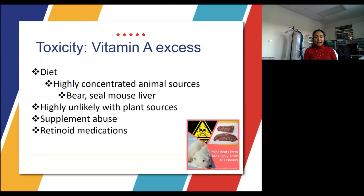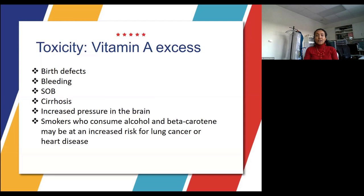Someone can also have vitamin A excess if they are abusing supplements, or certain retinoid medications can also cause vitamin A excess. Toxicity can lead to birth defects, bleeding, shortness of breath, cirrhosis, increased pressure in the brain. Smokers who consume alcohol and beta-carotene may be at increased risk for lung cancer or heart disease. These are effects that may happen when there is an excess of vitamin A in the body.